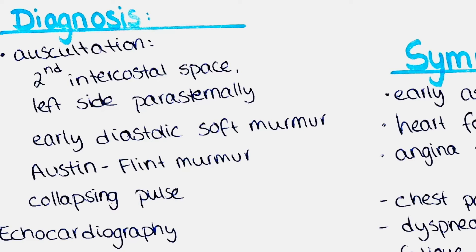Another important indicator is the regurgitant jet — the stream of blood that flows back from the aorta into the left ventricle during diastole, the time when the heart relaxes. The size and location of the regurgitant jet can help determine the severity of the aortic regurgitation.